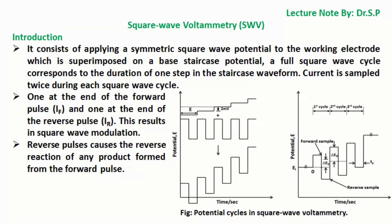The waveform consists of applying a symmetric square wave potential to the working electrode, which is superimposed on a base staircase potential. A full square wave cycle corresponds to the duration of one step in the staircase waveform, and current is sampled twice during each square wave cycle: once at the end of the forward pulse IF, and once at the end of the reverse pulse IR. This results in square wave modulation.